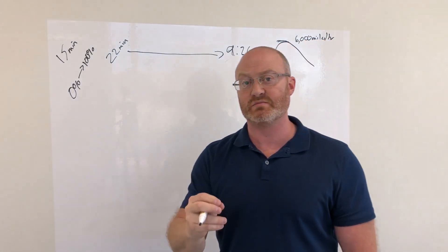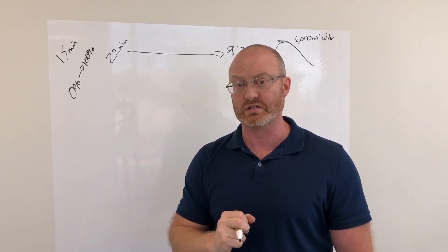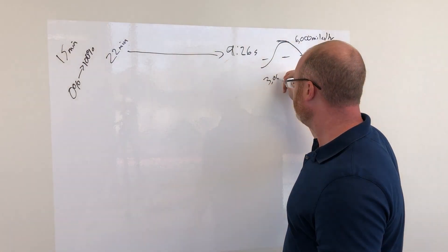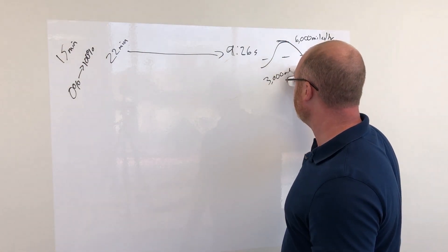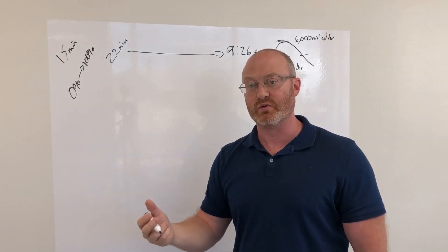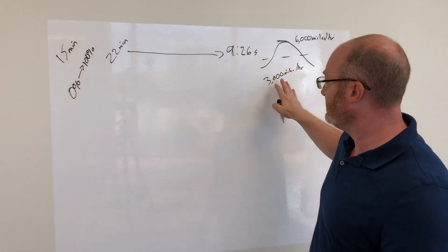That is six times faster than Tesla is able to achieve in the Model 3 today, with an average a little bit above 3,000 miles per hour. Again, three times faster than anybody else on the market today. That is incredible.